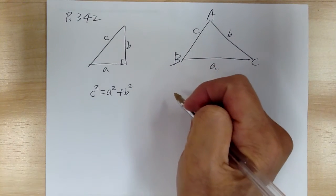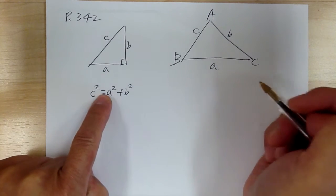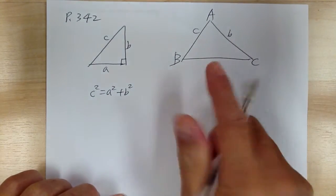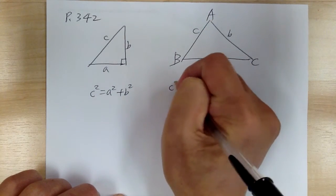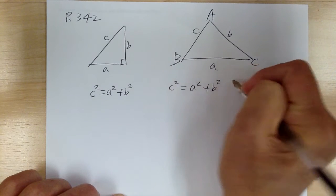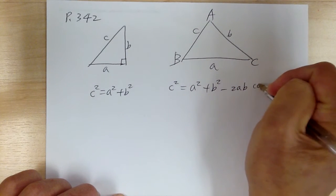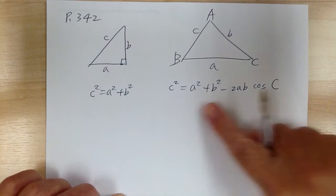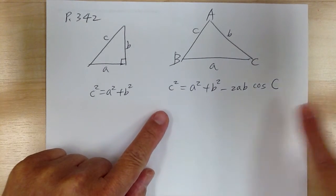And actually what happens is that the Pythagorean theorem is a special case of the general triangle. So the formula, if you're solving for C, will be C squared equal to A squared plus B squared minus 2AB cosine of C. So this is the formula for any triangle.